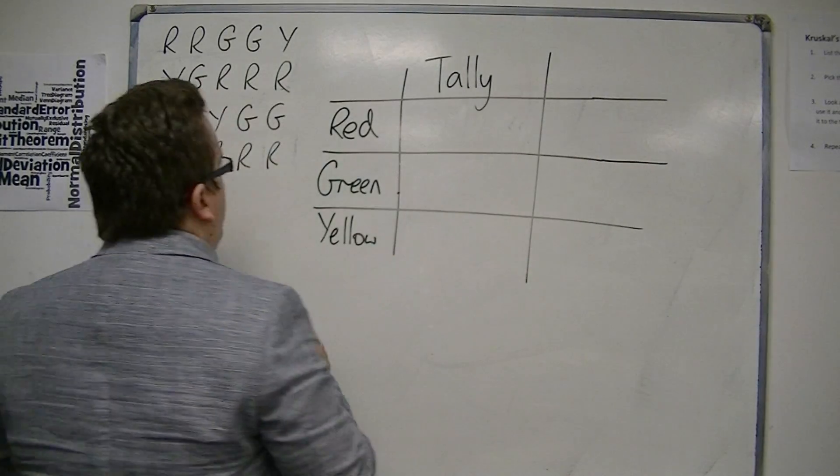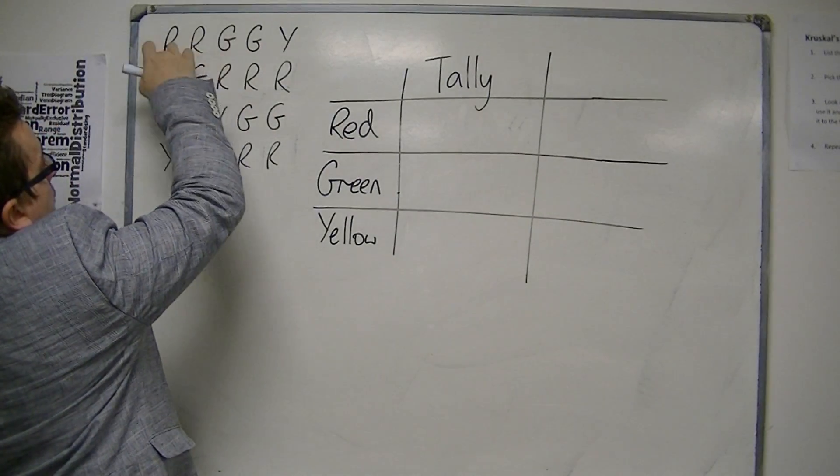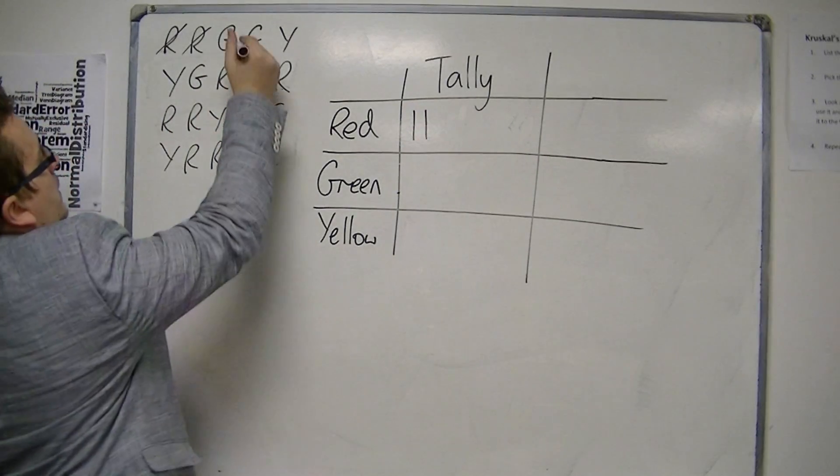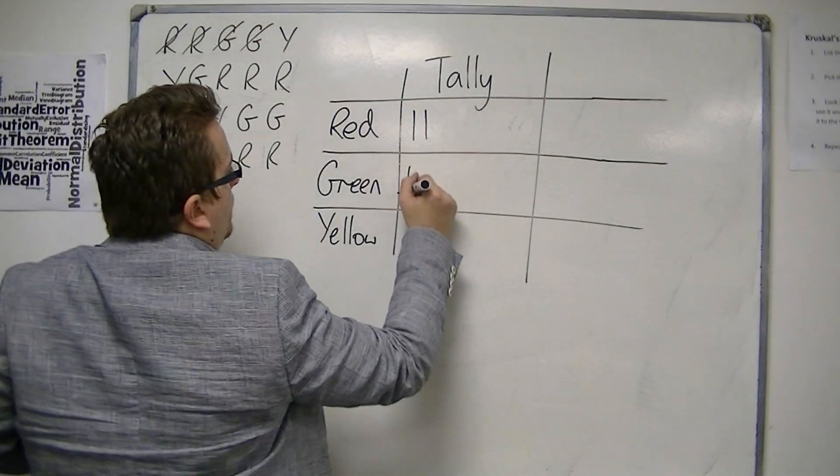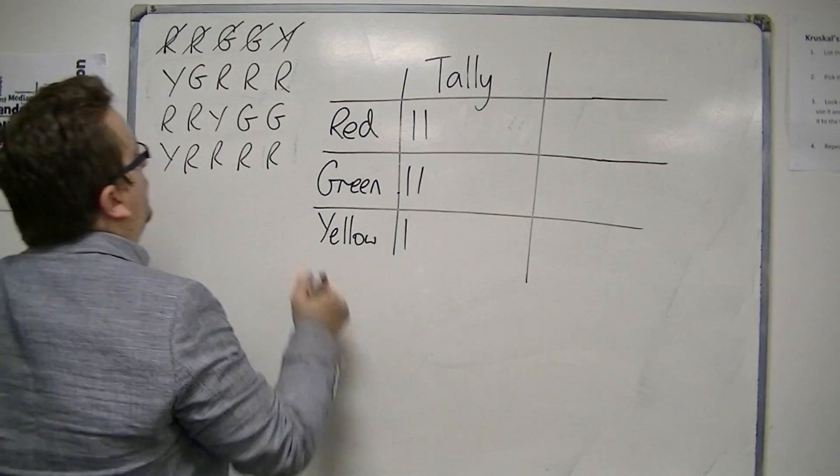So with my tally, I'm looking at the red for the first bit. So I've got two reds, and I can represent that with two vertical lines, then two greens, then I've got a yellow. Okay, so that's the first row done.